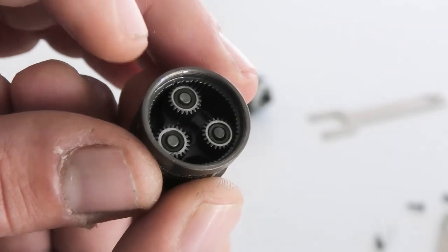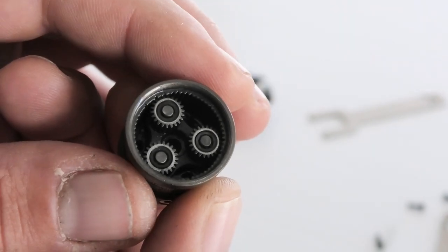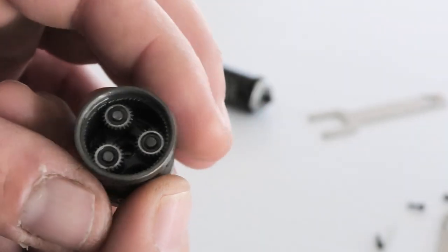So what I'm going to do is pull out these planetary gears, and you have to be really careful because there's needle bearings in there. So you don't want to lose those needle bearings. So I'm going to pull these out carefully and put them in something.